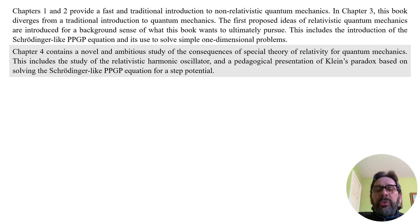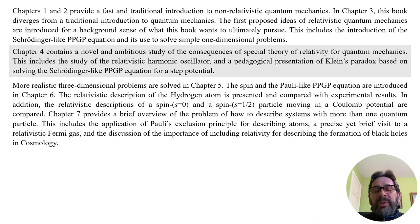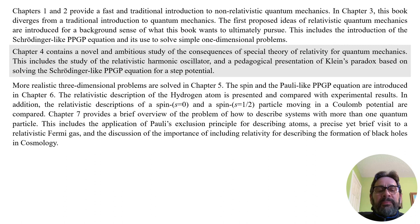Chapter 4 contains a novel and ambitious study of the consequences of special theory of relativity for quantum mechanics. This includes the study of the relativistic harmonic oscillator and a pedagogical presentation of the Klein paradox, based on solving the Schrödinger-like PPGP equations for step potential. More realistic three-dimensional problems are solved in Chapter 5. The spin of the Pauli-like PPGP equations are introduced in Chapter 6, where the relativistic description of the hydrogen atom is presented and compared with experimental results. Chapter 7 provides a brief overview of the problem of describing a system with more than one quantum particle, including application of the Pauli exclusion principle for describing atoms.